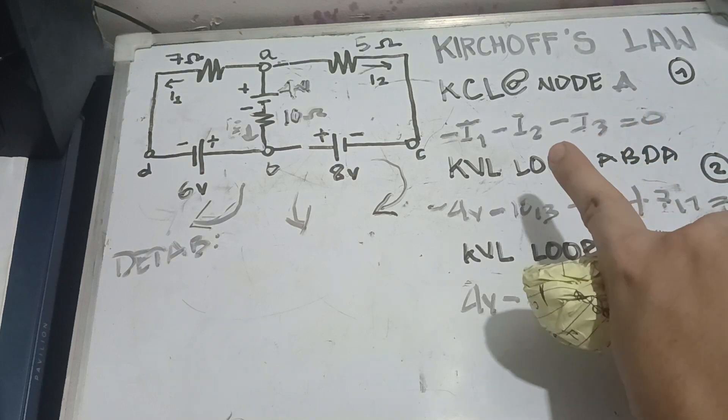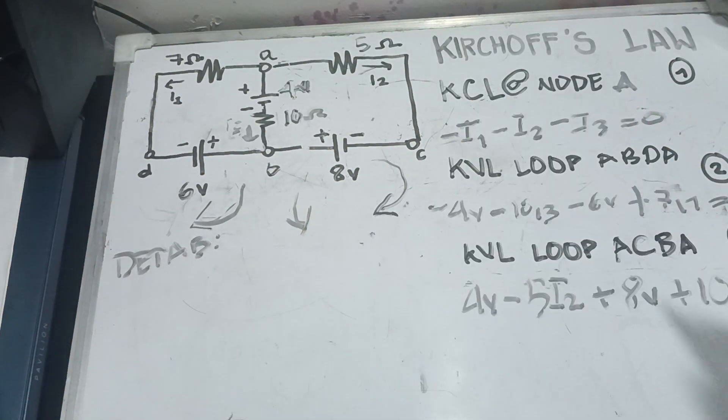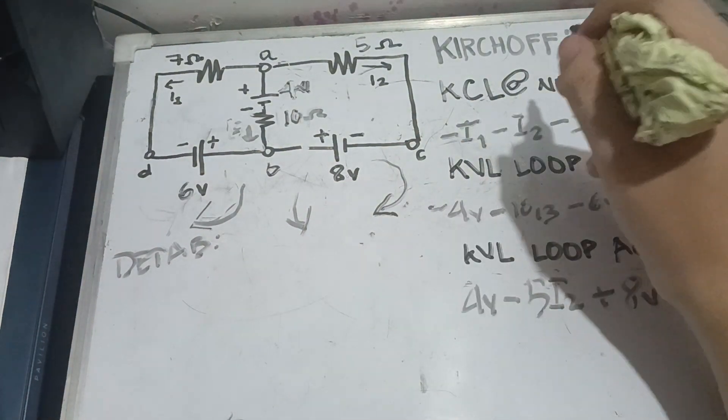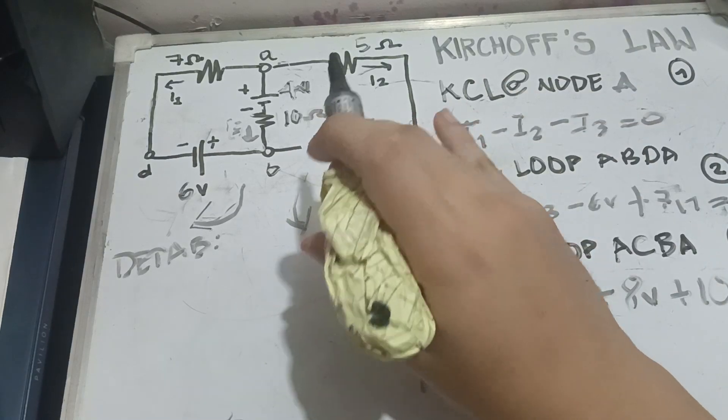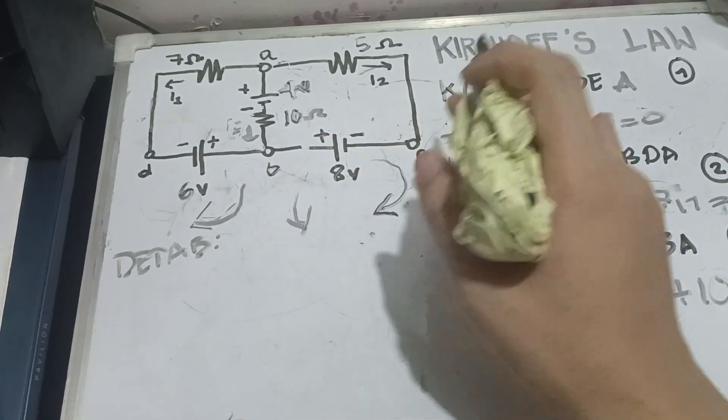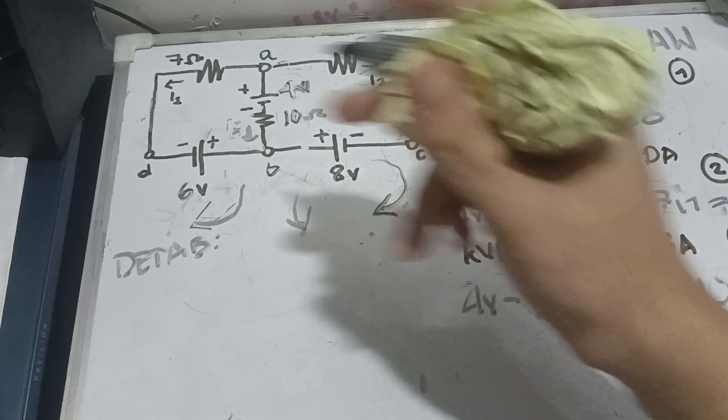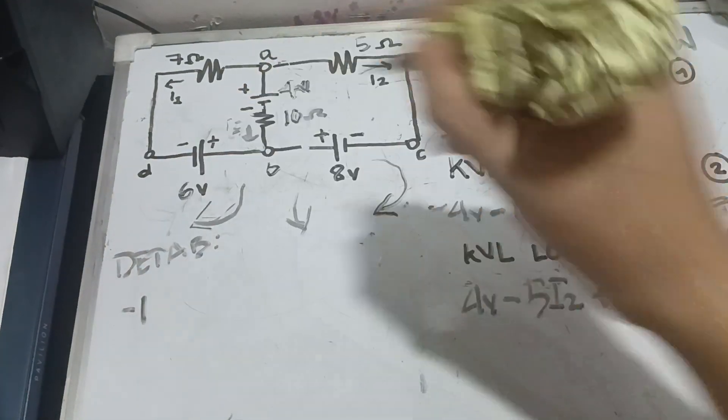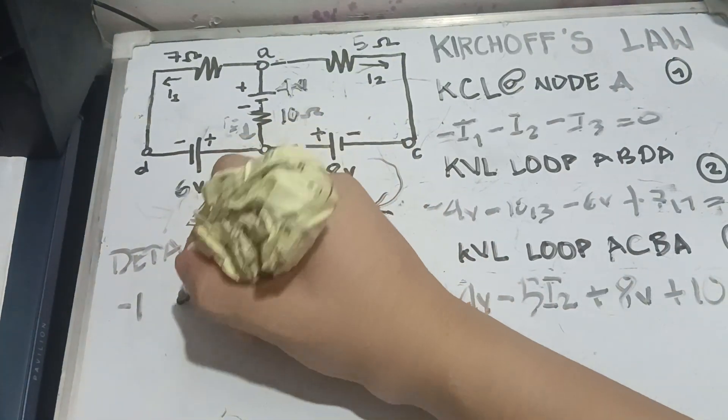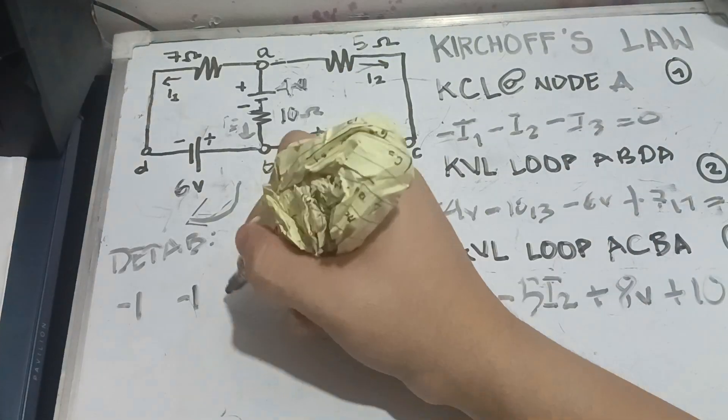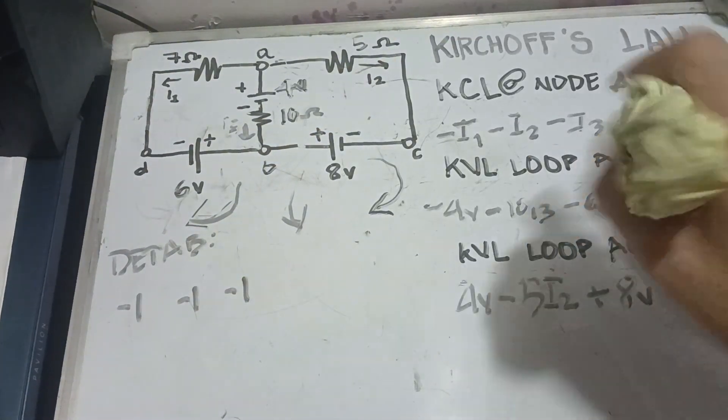So, let's copy this one into our table and how we're going to do this. All of our letter I or flow of I current, we're going to replace it as 1. Negative I1 is just negative 1. Negative I2 is just negative 1. Negative I3 is just negative 1. Then, copy the 0.